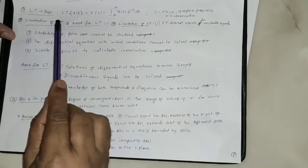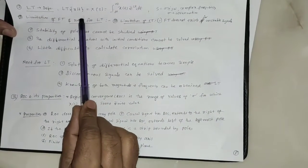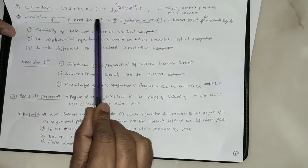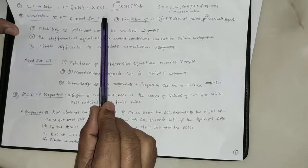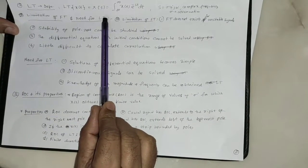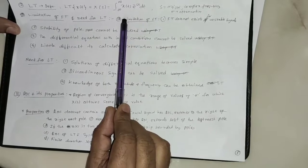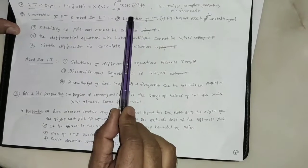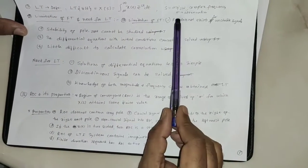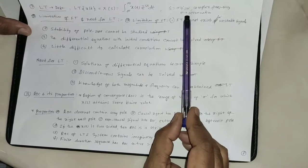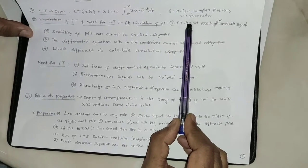Now I am going to explain Laplace transform of a signal. Laplace transform of x of t is given by X of s, equal to integration from minus infinity to plus infinity of x of t raised to minus st dt, where s is a complex frequency equal to sigma plus j omega.